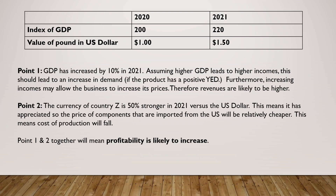Point one: GDP has increased by 10% in 2021 — you can see that from the index moving from 200 to 220. And assuming higher GDP leads to higher incomes — that's a very important connection to make — this should lead to an increase in demand, of course, if the product has a positive YED, income elasticity of demand.